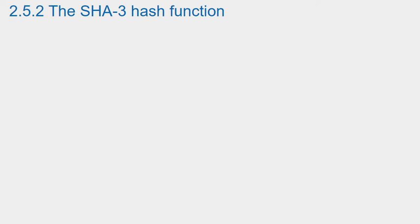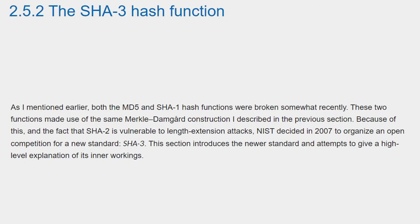Section 2.5.2, the SHA-3 hash function. As mentioned earlier, both the MD5 and SHA-1 hash functions were broken somewhat recently. These two functions made use of the same Merkle-Damgård construction described in the previous section. Because of this, and the fact that SHA-2 is vulnerable to length extension attacks, NIST decided in 2007 to organize an open competition for a new standard, SHA-3. This section introduces the newer standard and attempts to give a higher-level explanation of its workings.